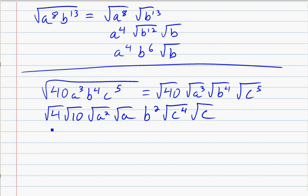Now I've got pairs and non-pairs. Square root of 4 is a perfect square, that's 2. Square root of 10 is not. Nothing I can do with that, so I leave it as square root of 10. Square root of a squared is a perfect square. Square root of a is fully simplified. Copy down b squared. Square root of c to the 4th, perfect square, that's c squared. Square root of c is fully simplified.